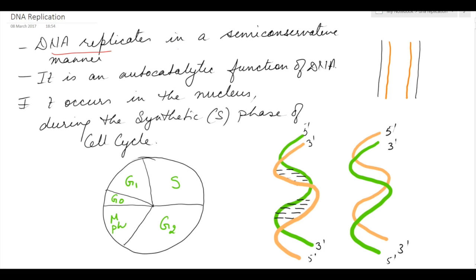DNA replicates in a semi-conservative manner. We all know that DNA is double-stranded. So, when a DNA replicates, the two DNA molecules that are formed each has one old strand and one new strand. This is how the two DNA will look when they are formed — one old strand and one new strand in each.